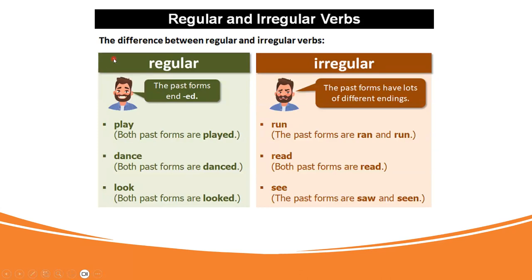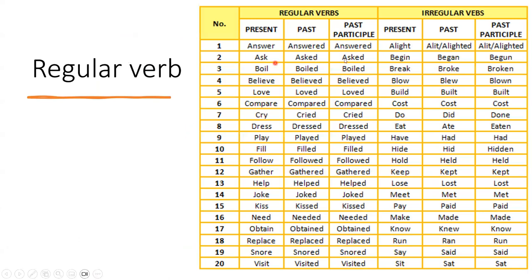We have different kinds of verbs in the past: regular and irregular. Regular verbs end with -ed: play → played, dance → danced, look → looked. Irregular verbs have different endings — not -ed: run → run, read → read, see → saw. More regular examples: answer → answered, ask → asked, play → played, need → needed.